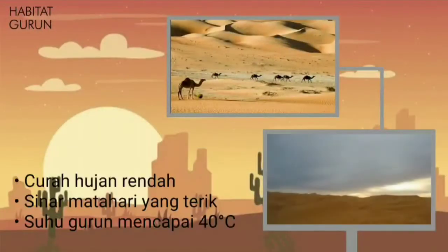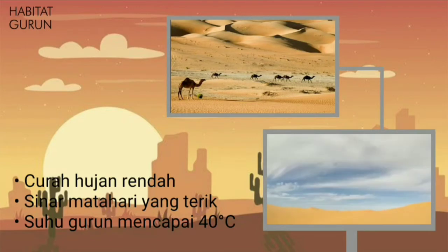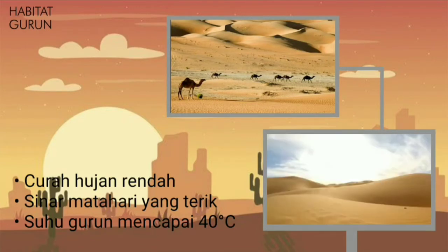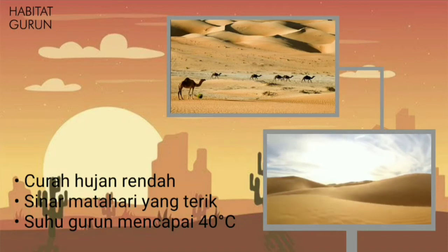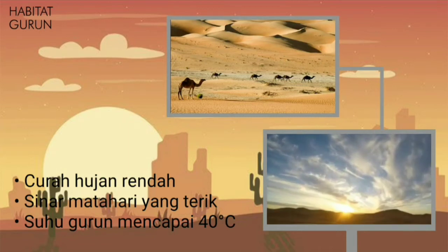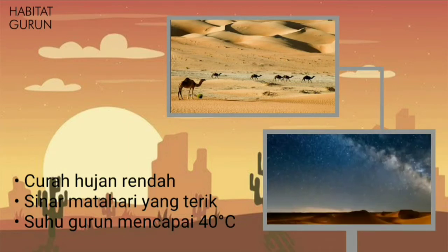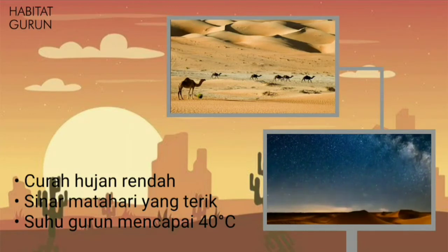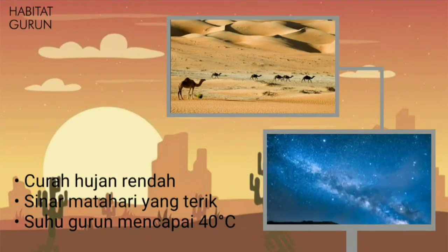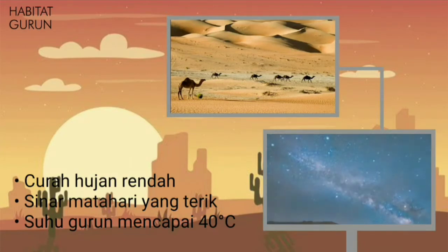Yang ketiga, ada daerah gurun. Daerah gurun memiliki curah hujan yang sangat rendah dan sinar matahari yang sangat terik. Hal tersebut menyebabkan suhu di sana sangat tinggi sehingga mencapai 40 derajat Celsius. Namun, pada malam hari suhu di sana bisa menurun sangat rendah.